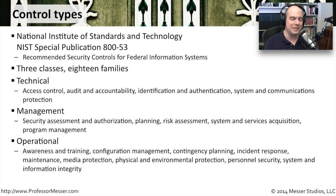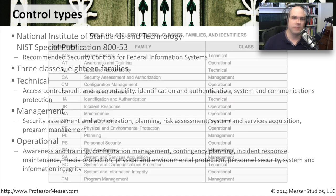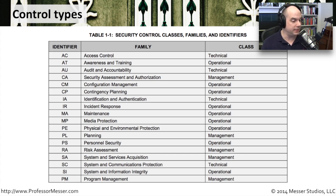All three of these classes work together — you really can't look at just one of them. You have to take into account your technical controls, your management controls, and your operational controls as well. Here's a chart that summarizes these classes, families, and what they call identifiers for each one. It wouldn't be a federal document without a list of abbreviations associated with these.